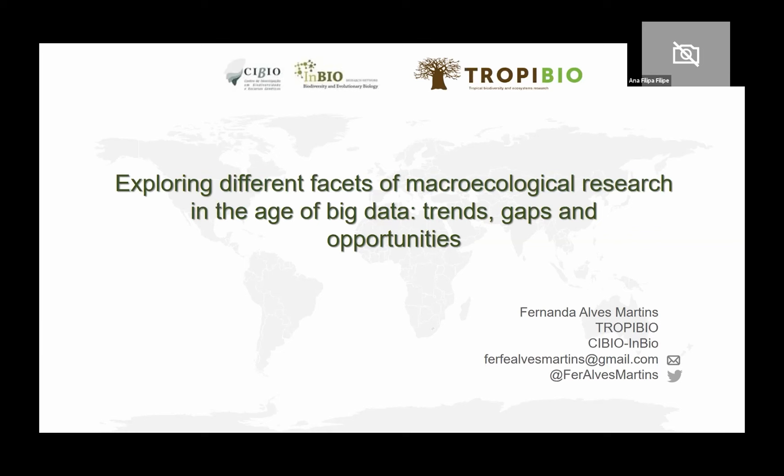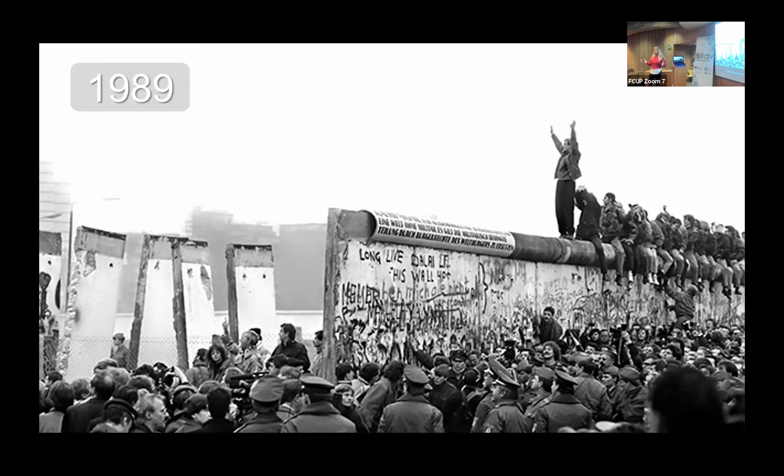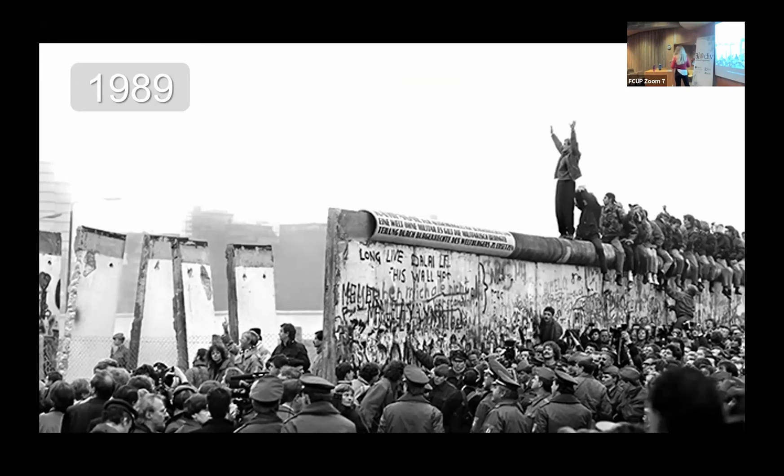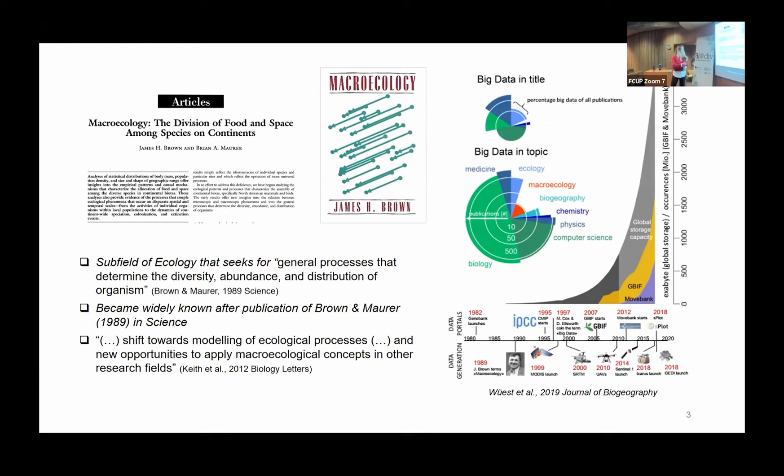I would like to start with the year 1989. It was a very important year for the world — a benchmark because it was the year of the fall of the Berlin Wall. But for us ecologists, it was a very important year as well, and for me especially, because it was the year that Brown and Maurer published this paper in Science that defined macroecology as a subfield of ecology.